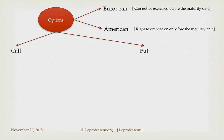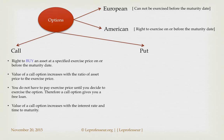Options can be of two types: a call option and a put option. A call option gives the right to buy an asset at a specified exercise price on or before the maturity date.